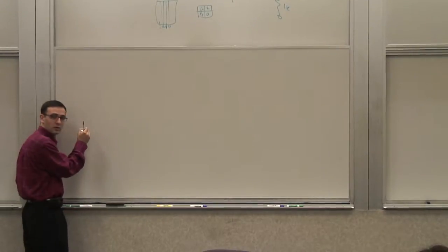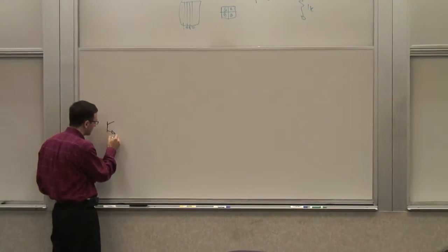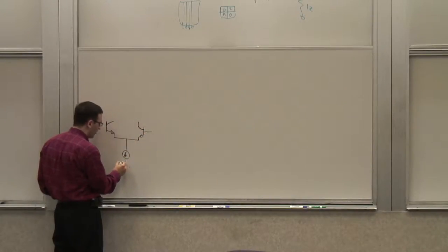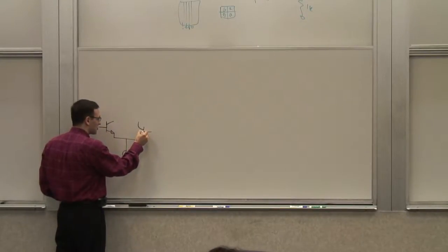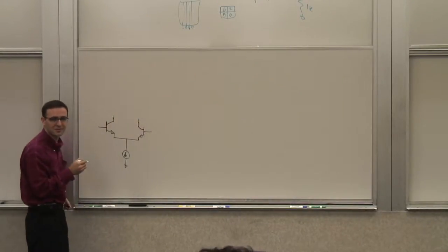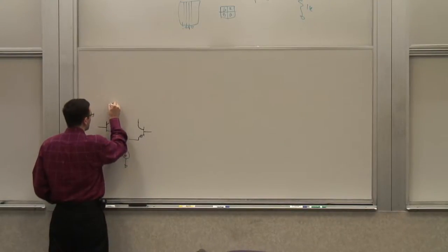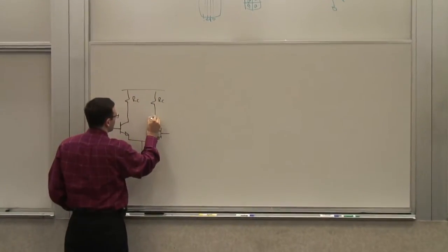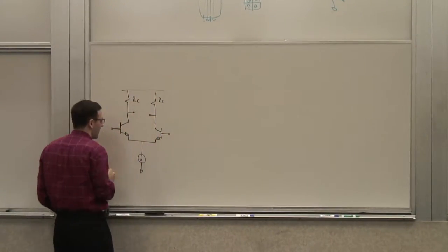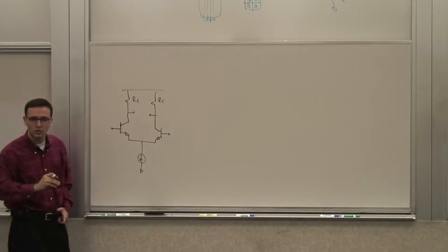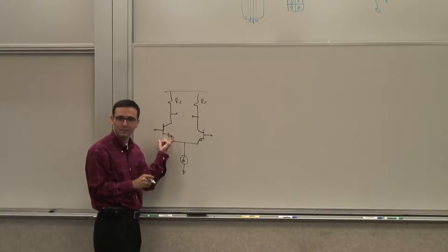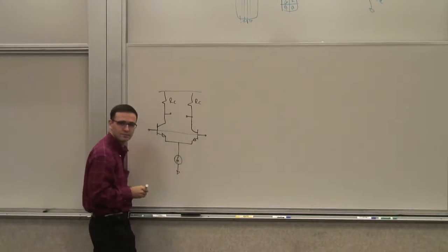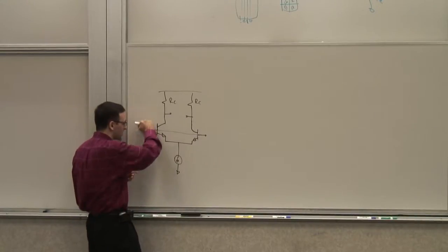This is a basic differential pair — it can also be called a source-coupled pair. If you have a common-mode signal, it means both voltages are the same; both terminals are moved up and down at the same time. So I have one voltage that pulses both of these up and down.